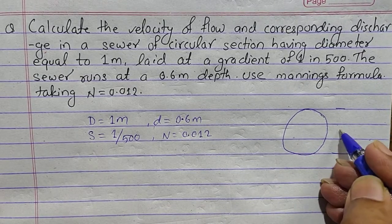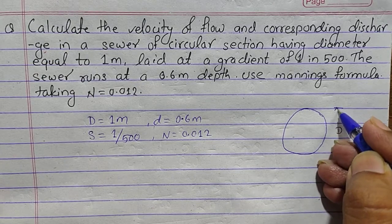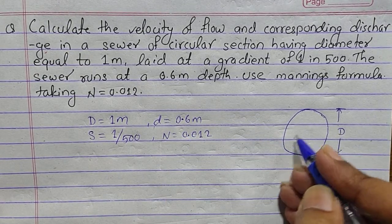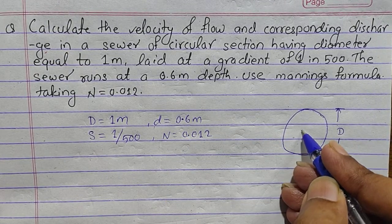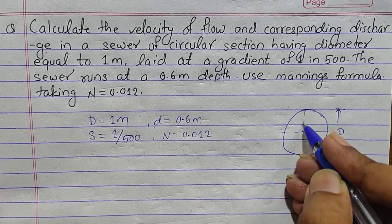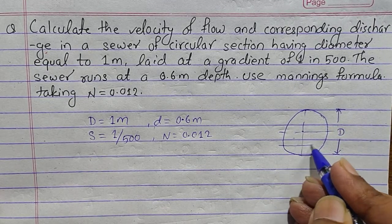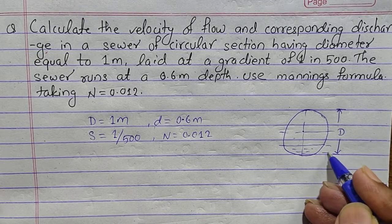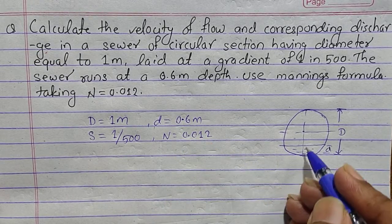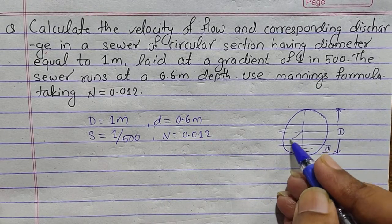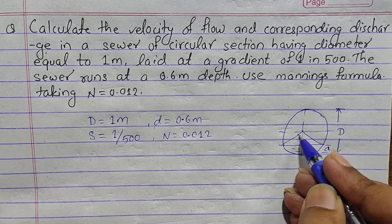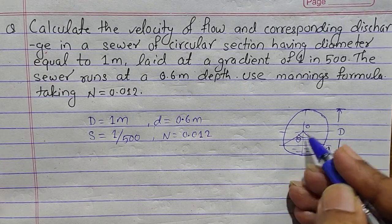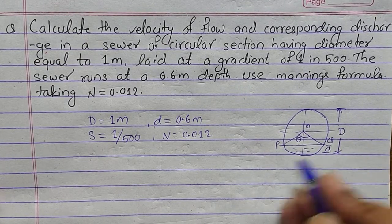In the sketch, capital D is given as 1 meter. The circular sewer is running at depth small d equals to 0.6 meter. Here the central angle is theta, and this forms our triangle OPQ.